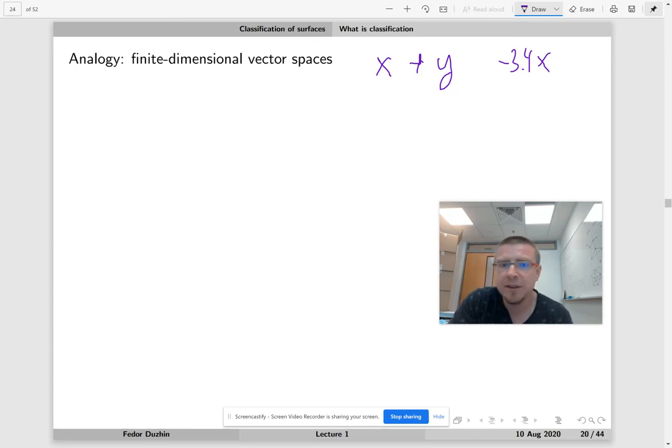So recall that in linear algebra 2, you learned what it means for two vector spaces, say v1 and v2, to be isomorphic.